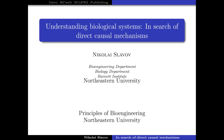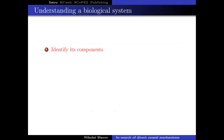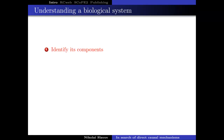What does it mean to understand biological systems, and how can we uncover direct causal mechanisms? I would like to outline one approach in terms of a hierarchy. If you want to understand the system, it's hard to understand it if you don't even know its components. So first you would like to identify components, and that's relatively easy these days with the technologies that we have — we can find a parts list, the famous metaphor from the sequencing of the human genome. We can measure these components across many conditions.